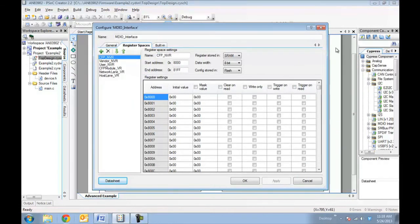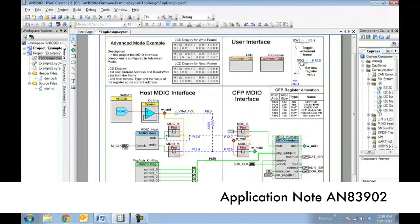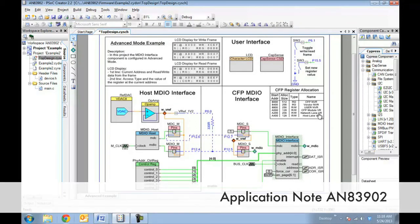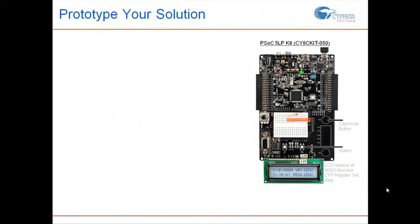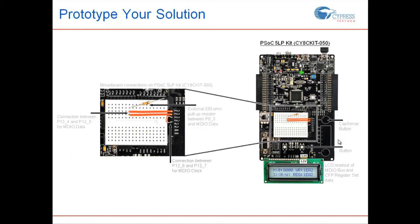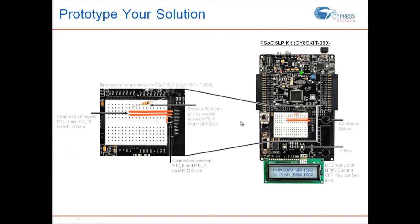Further details on this implementation are available in application note AN83902. Now let's take a look at the hardware. The solution is developed using readily available kits from Cypress. You could either use the PSOC 5 LP kit, CY8CKIT-050, or the PSOC 3 kit, CY8CKIT-030. For this walkthrough, we will be using the PSOC 5 LP kit. Breadboard connections for the MDIO bus to enable loopback communication are shown. These are also outlined in the application note.